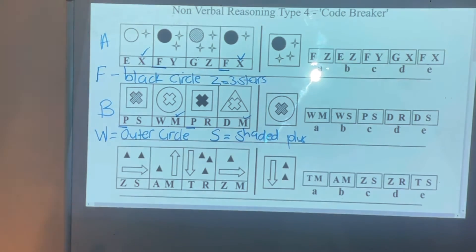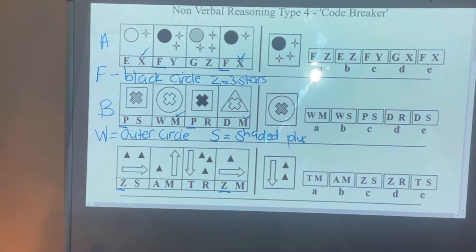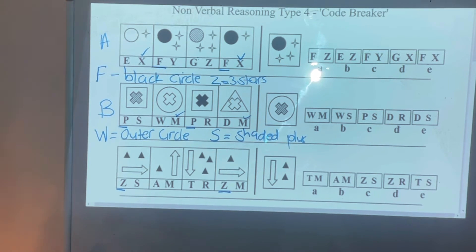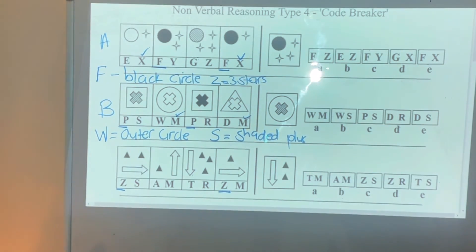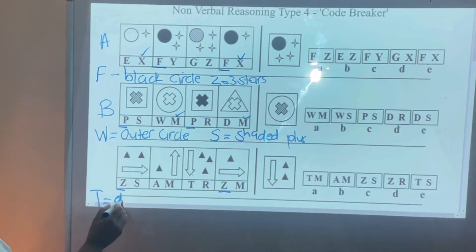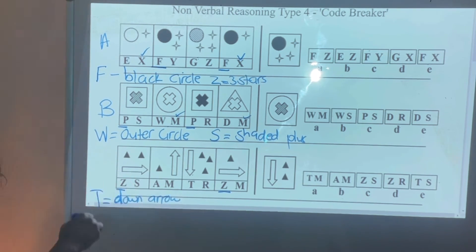Now let's move to the last one in our practice. On here I have a Z and a Z there. Where are these two similar? They've got an arrow pointing the same direction — that's where they are similar. Now on here my arrow is pointing down, so which one is similar to this? This one matches, which means the first letter will be T. T means a down arrow — arrow pointing down.